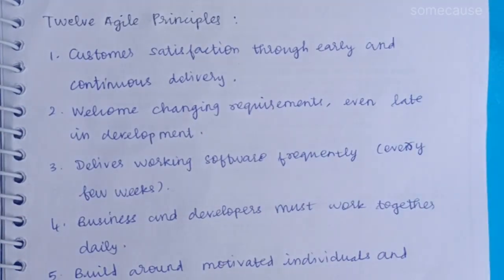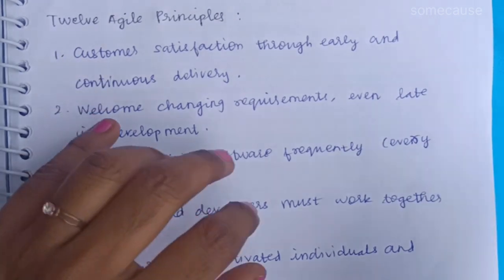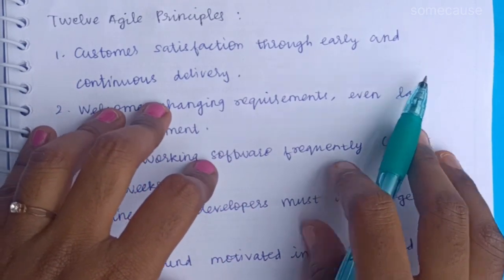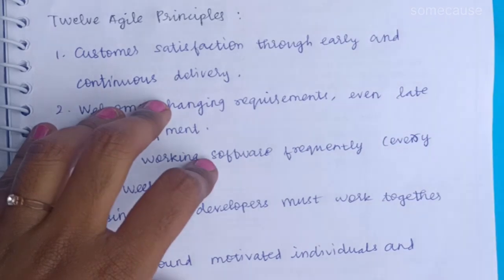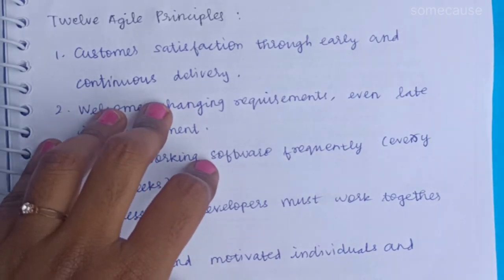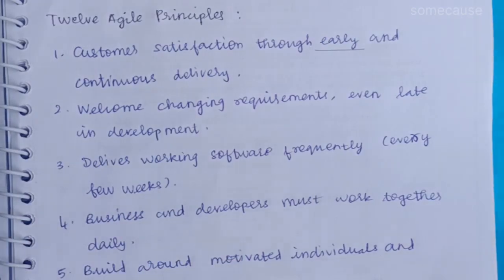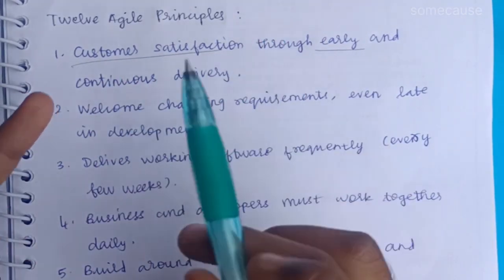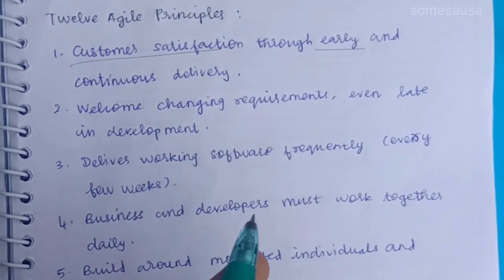One of the main things is these are the Agile Principles — these are very important. The first principle is customer satisfaction. Customer satisfaction is very important in Agile Principles. We need to deliver products — software we need to deliver. Customer satisfaction is very important.